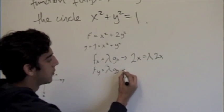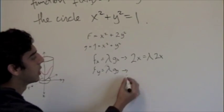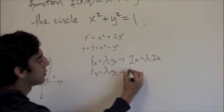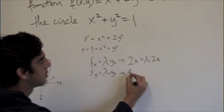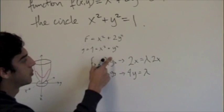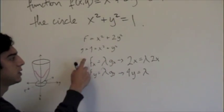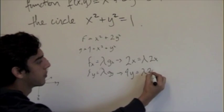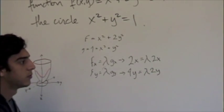For y, the partial with respect to y of f will be 4y equals lambda times the partial with respect to y of g, which is 2y.